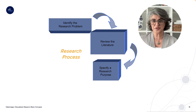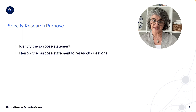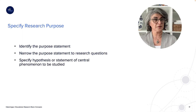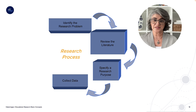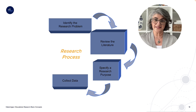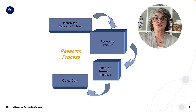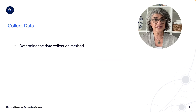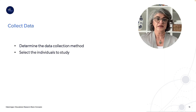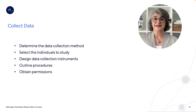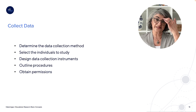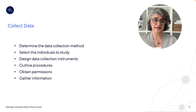After this, we specify the purpose — usually identifying a research statement, research question, and potentially a hypothesis or central phenomenon to study. Once research purposes and questions are aligned, I start working on deciding the methodology in order to collect data and identify sources. To collect the data, I identify the method I'll use, select the individuals I'll target, design collection instruments, outline my procedures, obtain necessary permissions when collecting data from human individuals, and then go out and gather the information.